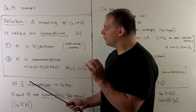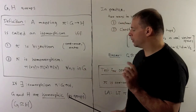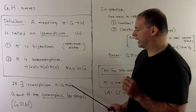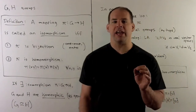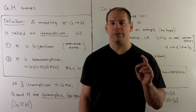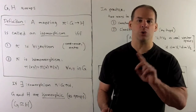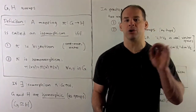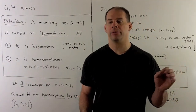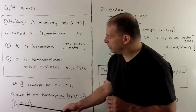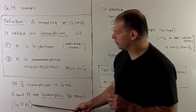Now if we can find an isomorphism between two groups G and H, we'll say that G and H are isomorphic — as groups, if there are other structures around — and we'll write that with the congruent sign: G ≅ H.